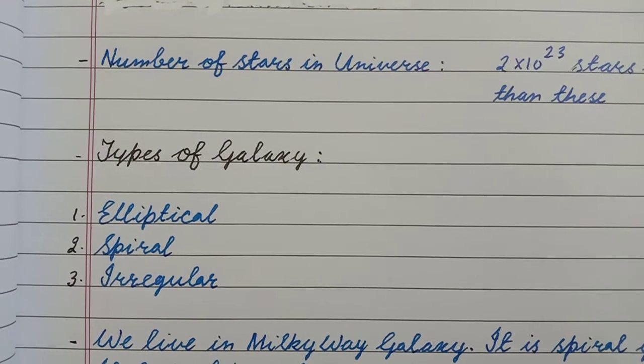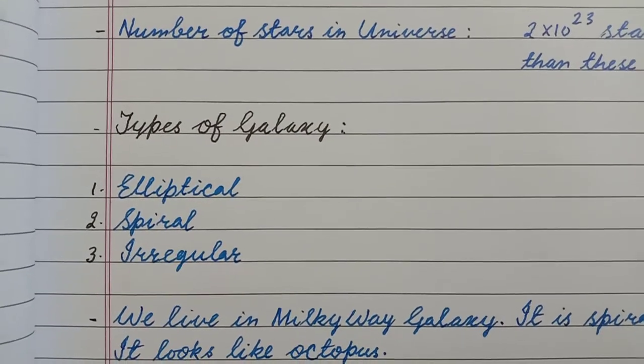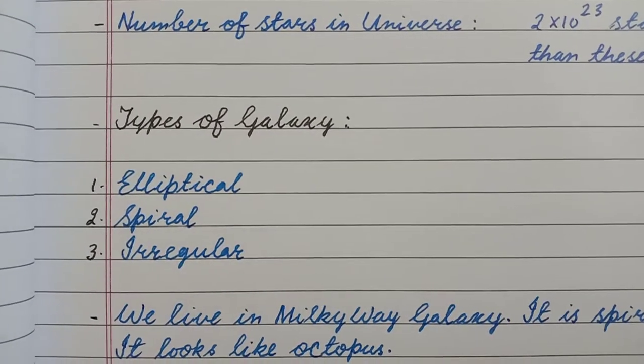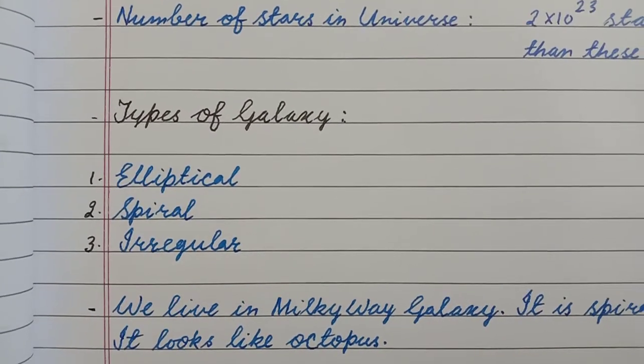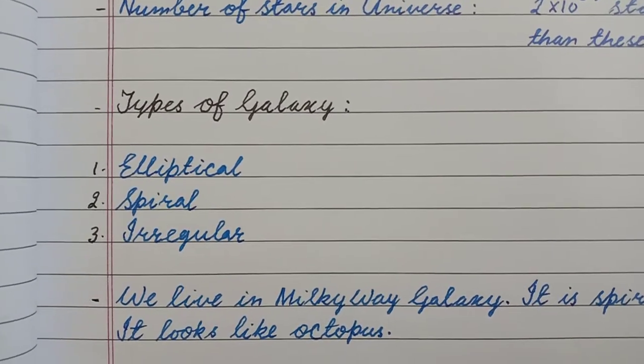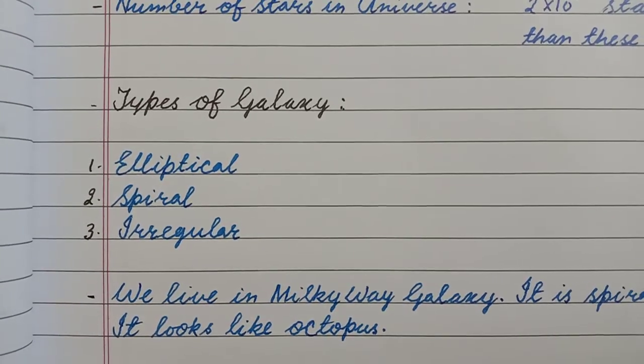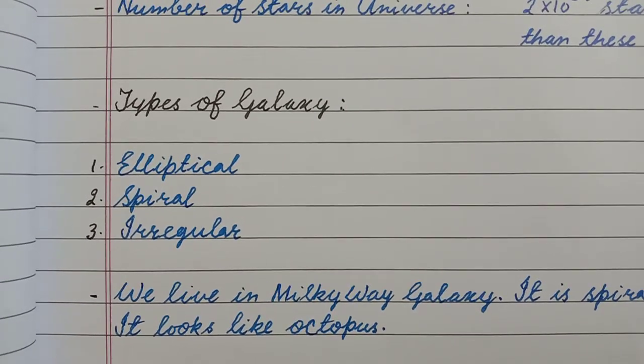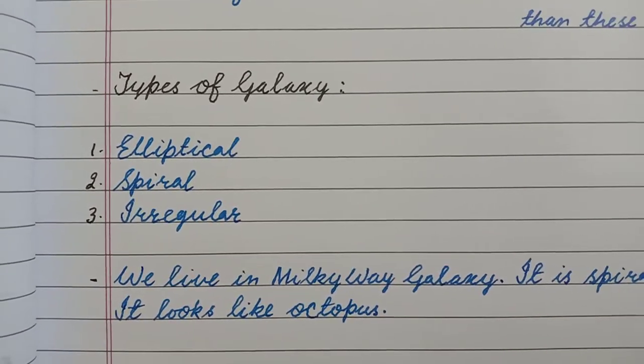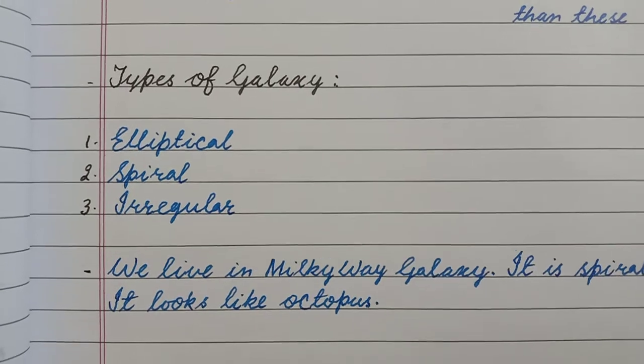Types of galaxy: 3 types — elliptical, spiral, and irregular.